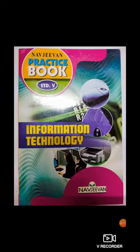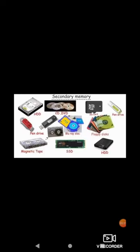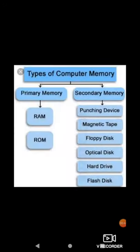Good morning students, welcome back to your computer lecture. In this video we will cover the remaining part of chapter number two, so I request all students to be ready with their computer workbook and a pencil. During our class sessions we learned about the types of memory from the second chapter. Primary memory is divided into RAM and ROM. RAM stands for random access memory, ROM stands for read-only memory. This is just a refresher or recap.